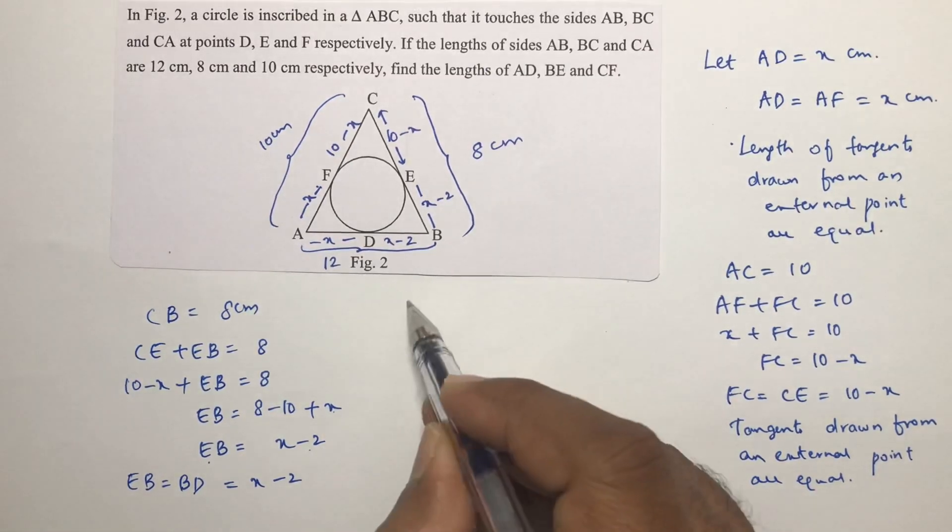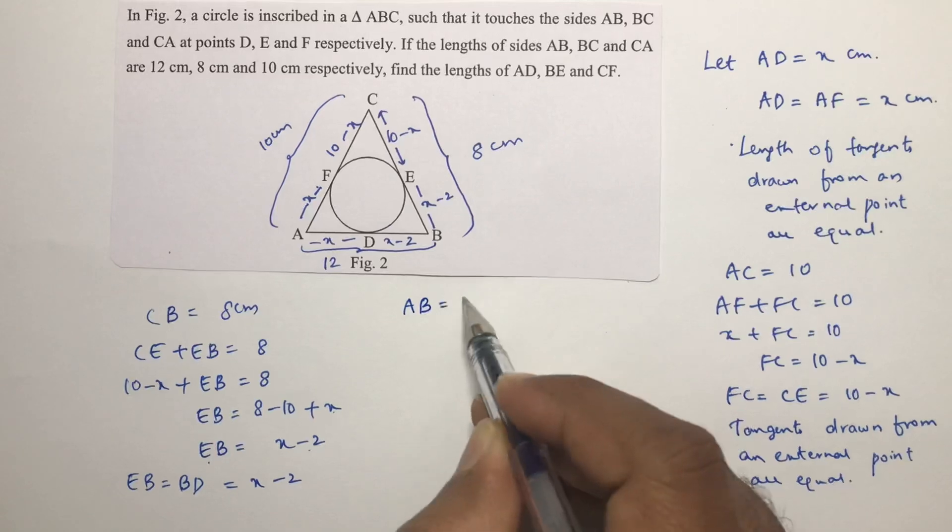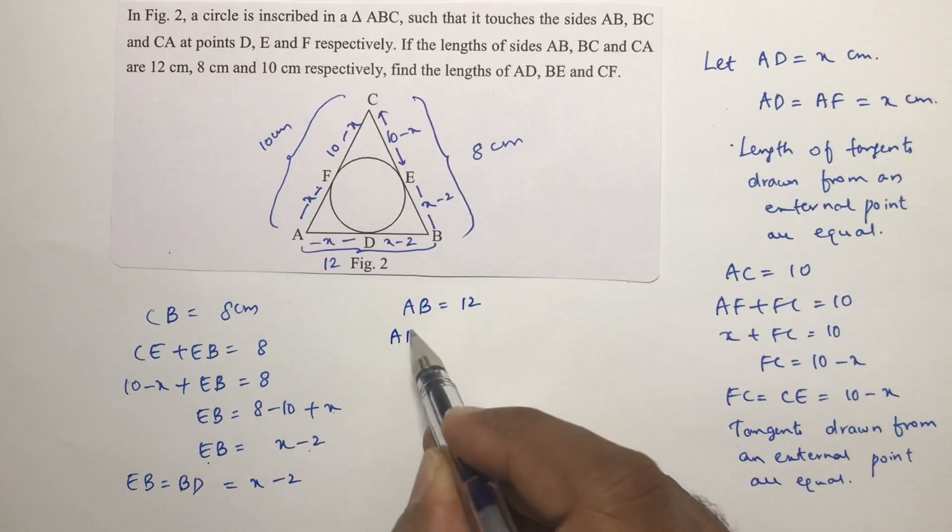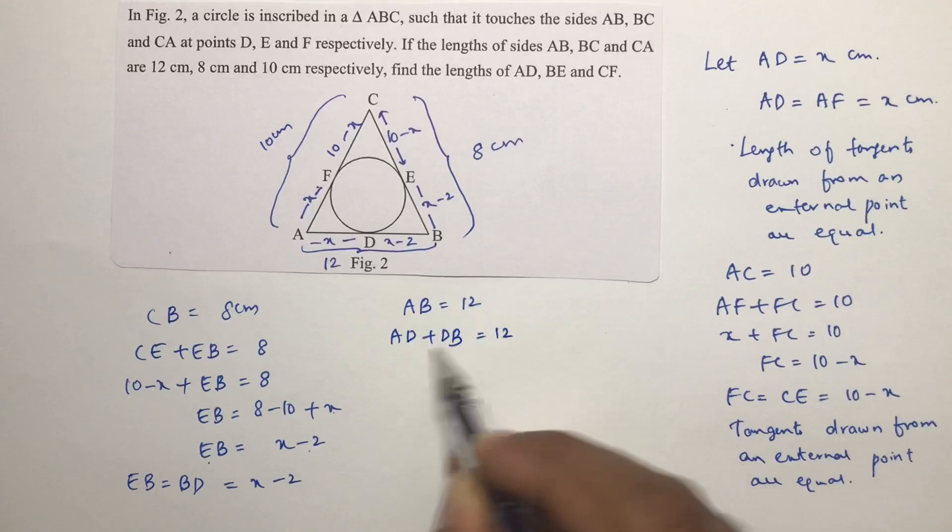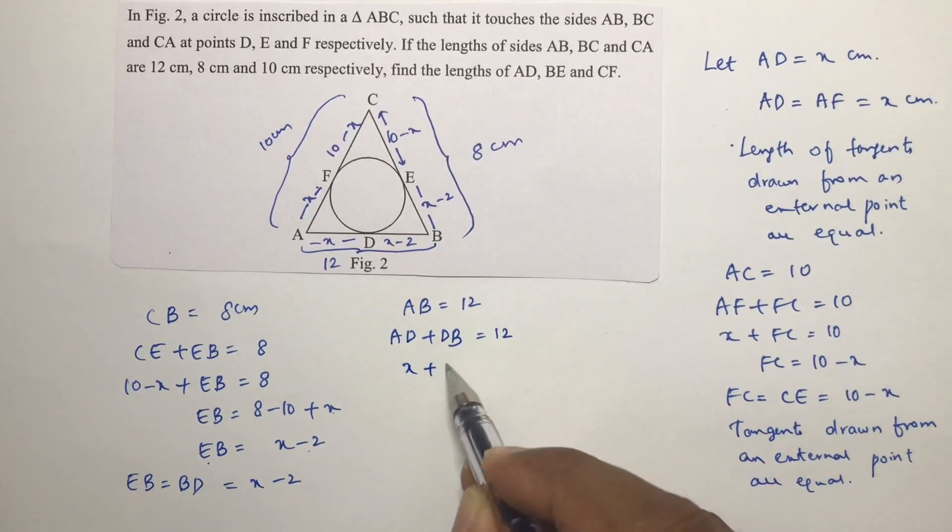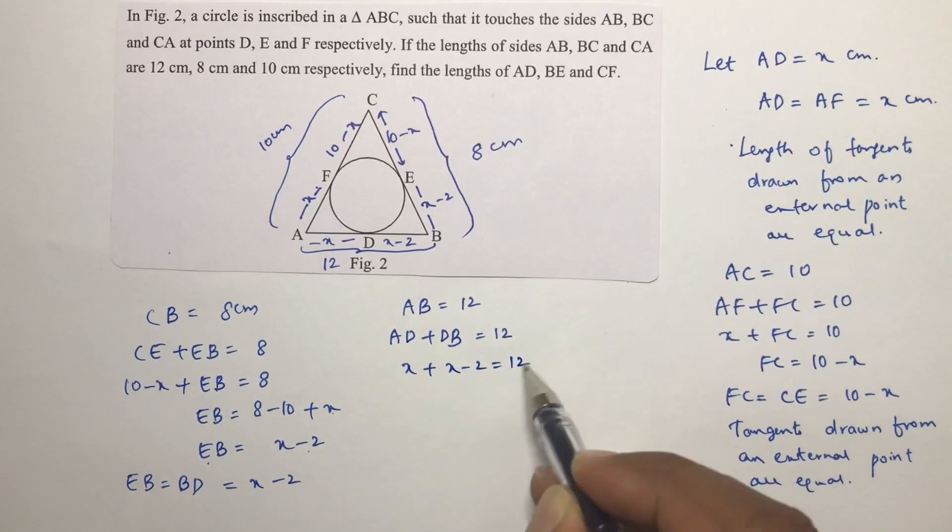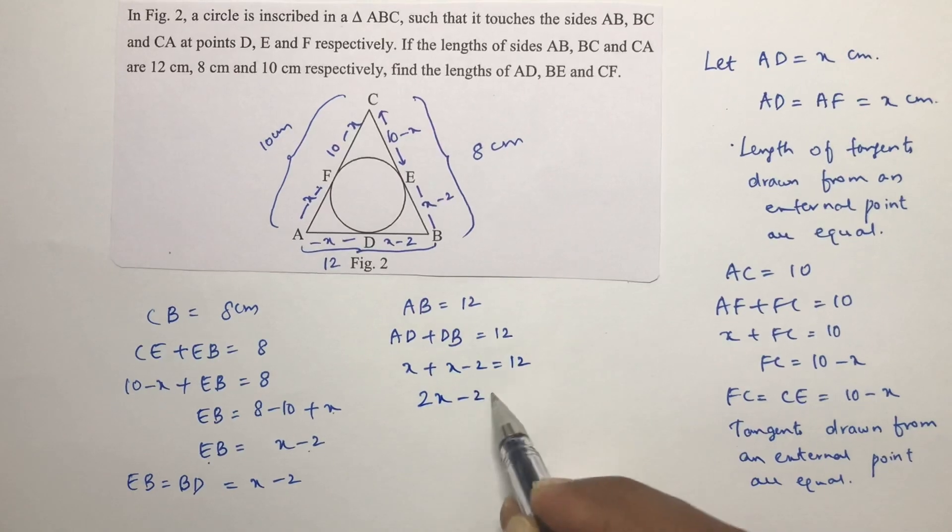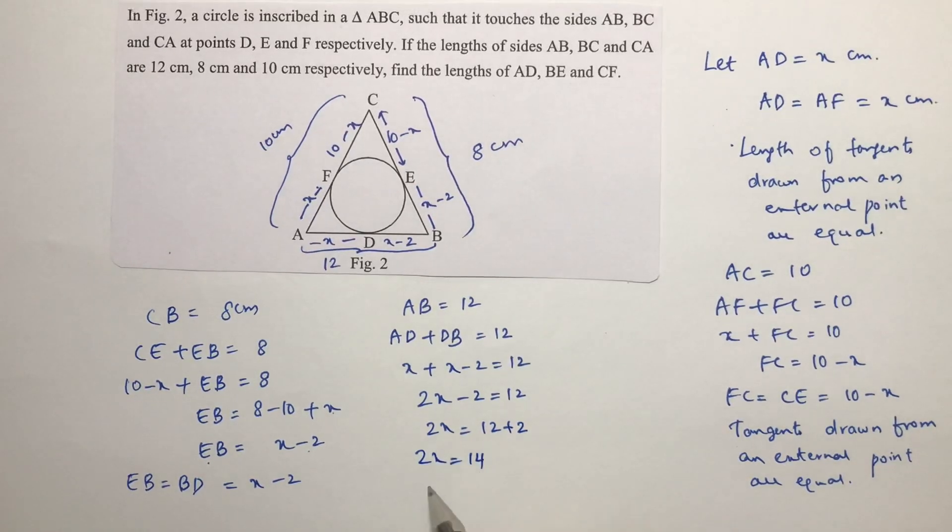Now if we will see AB, AB is 12 but AB is AD plus DB equals 12. AD is x, DB is x minus 2 is 12. So 2x minus 2 equals 12, 2x equals 14, x equals 7 centimeters.